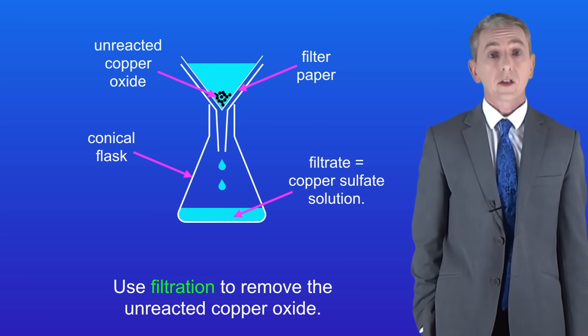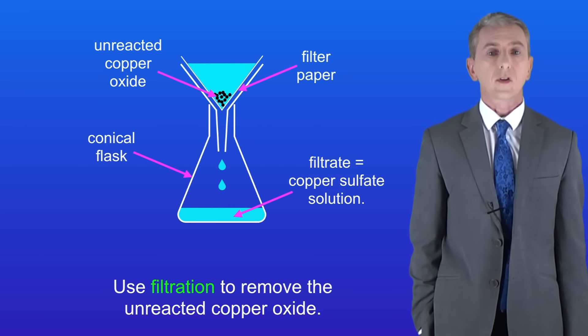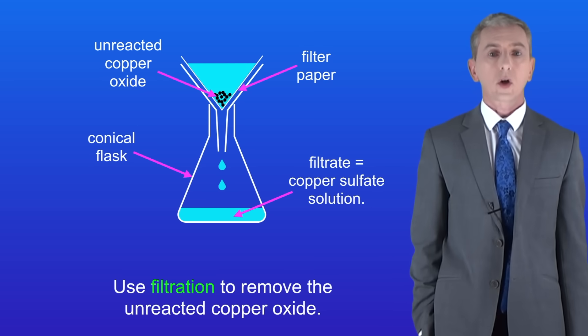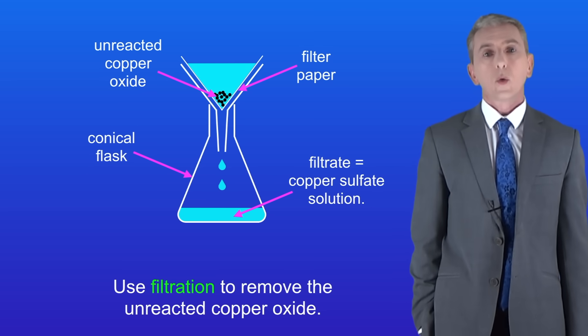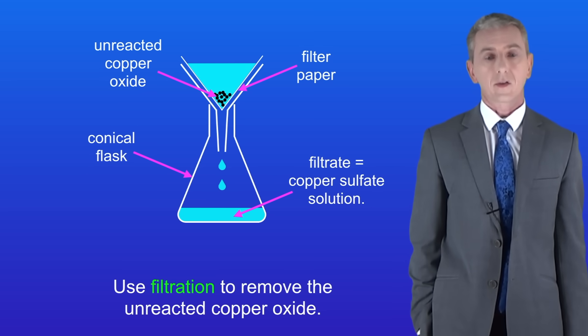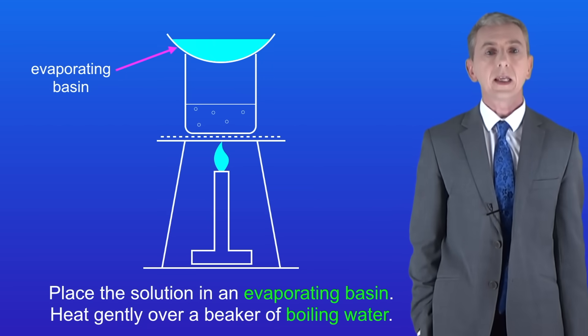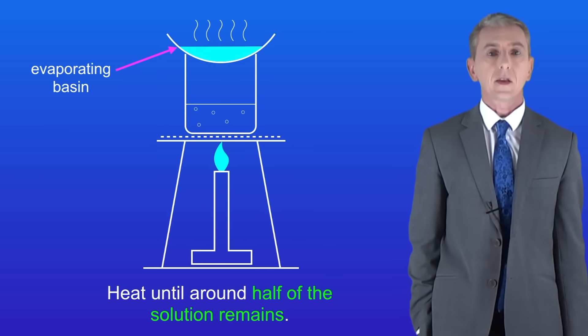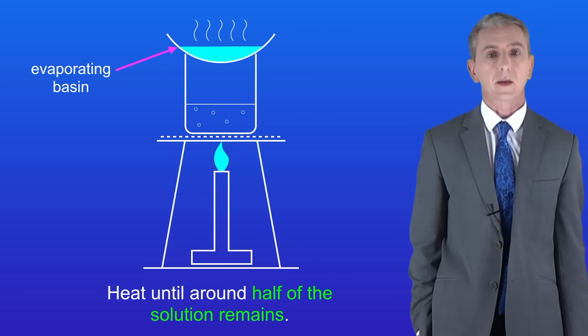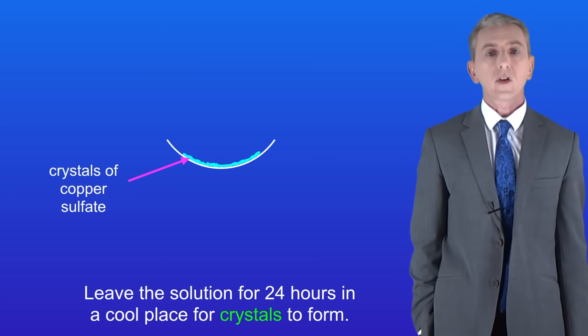Now in the final stage we need to make crystals of our salt and to do this we use evaporation. We take our copper sulphate solution and place this in an evaporating basin like this. We then heat this gently over a beaker of boiling water. We need to heat this until around half the solution remains. At this point we leave the solution for 24 hours in a cool place for copper sulphate crystals to form.